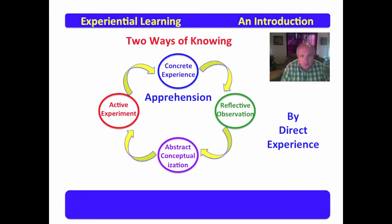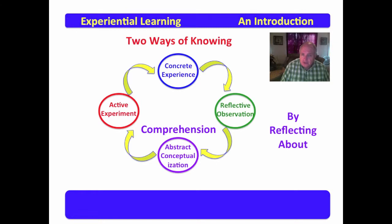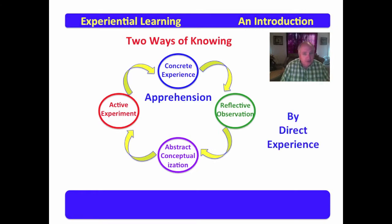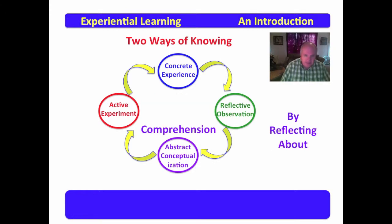There are two ways of knowing that we find in this model. The first is apprehension, which is gained by direct experience. The next is comprehension, which comes as a result of the relationship between reflection and conceptualization. Apprehension comes from the experience, primarily drawing upon active experiment and a bit of reflection. Comprehension comes by reflecting about the experience you've had and then drawing it into theories or ideas about what that experience means.